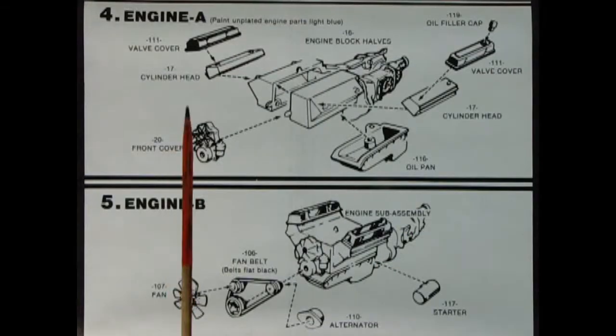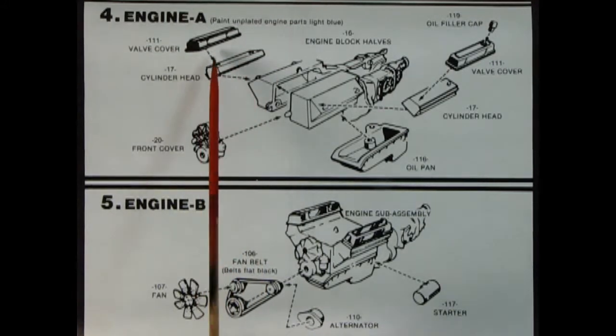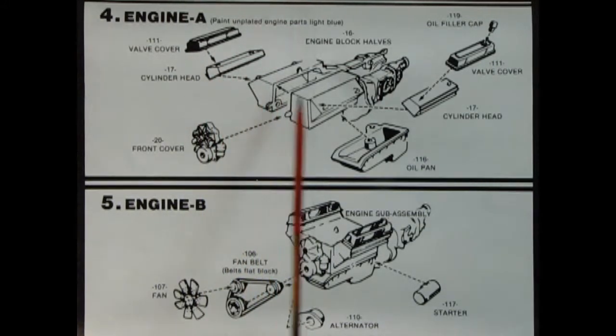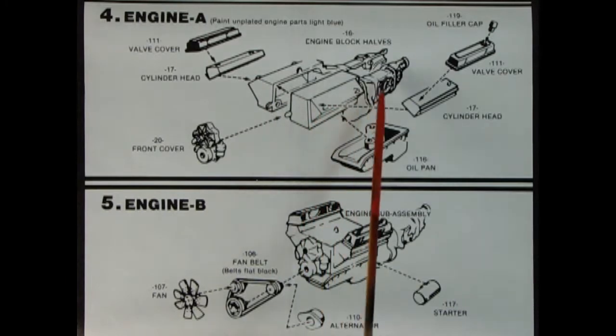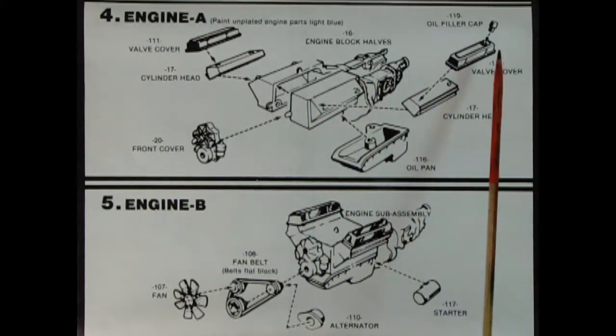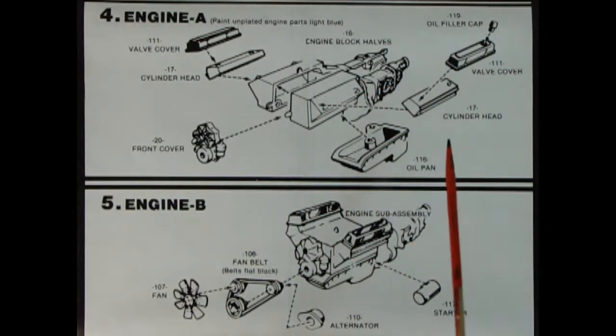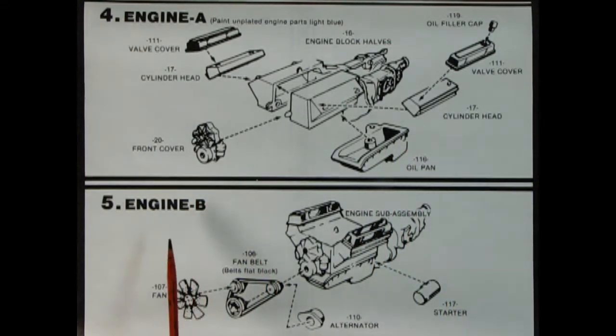Panel four shows engine assembly A. And there we've got our valve covers and our cylinder head, our left and right hand side engine block with the transmission molded on the back. We've got a little chrome filler cap there as well, and a chrome oil pan, and our front cover. Then if we look at engine assembly B, we've got our starter going on the side, our alternator, our fan belt, and our fan.